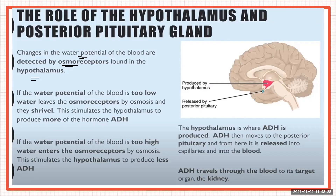Related to the cell example we discussed: if the water potential of the blood is too low, water leaves cells by osmosis. The same happens with the osmoreceptors in the hypothalamus — water leaves the osmoreceptors by osmosis, causing them to shrivel and decrease in size. This is detected by the hypothalamus, which is then stimulated to release antidiuretic hormone (ADH).